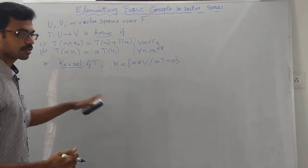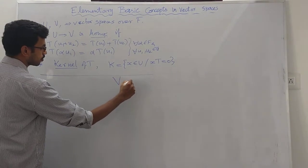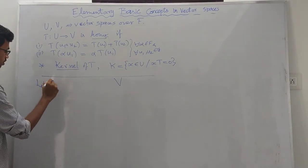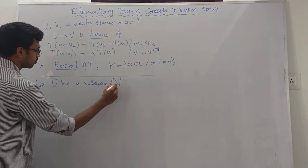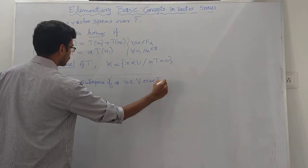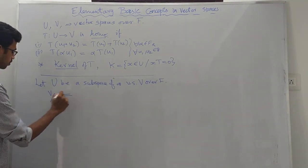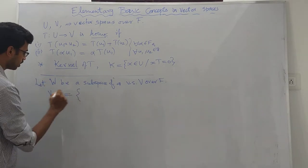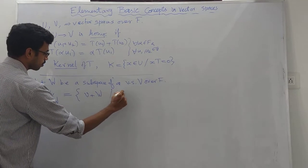In theory, let U be a subspace of a vector space V over F. Then V modulo U equals W. V modulo W is defined as the set of all elements of the form small v plus W, such that small v belongs to V.